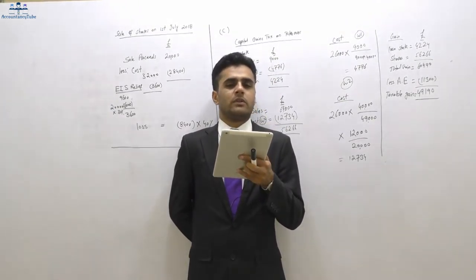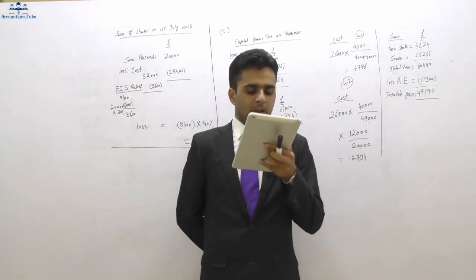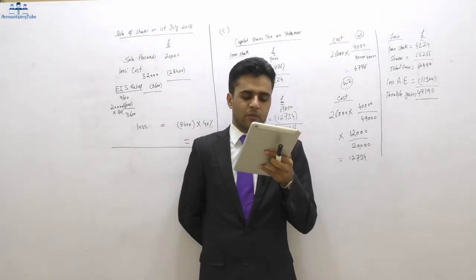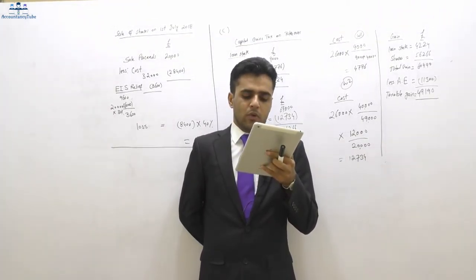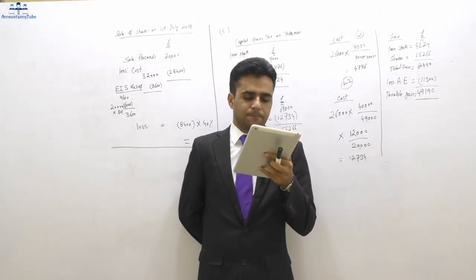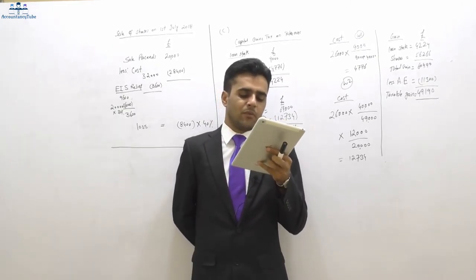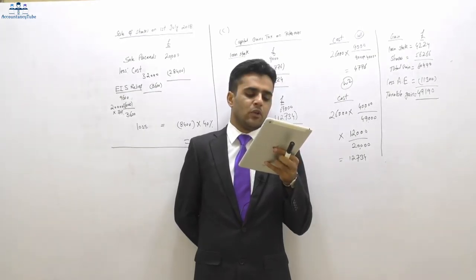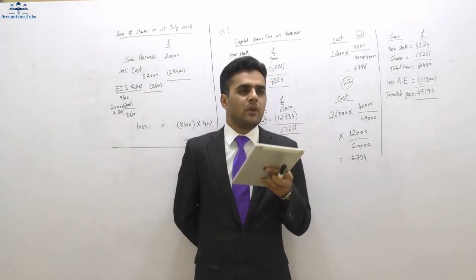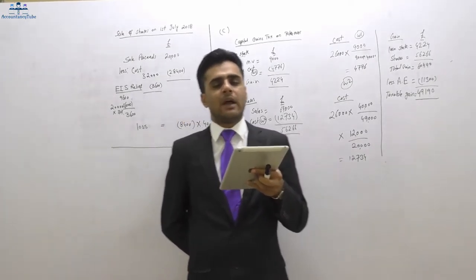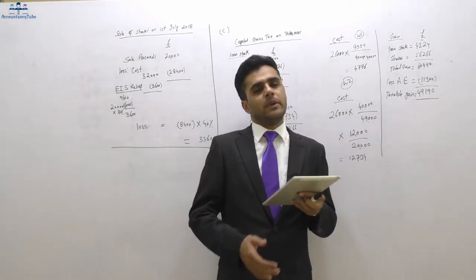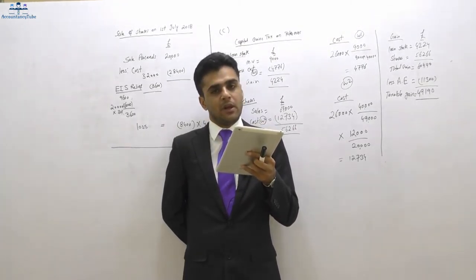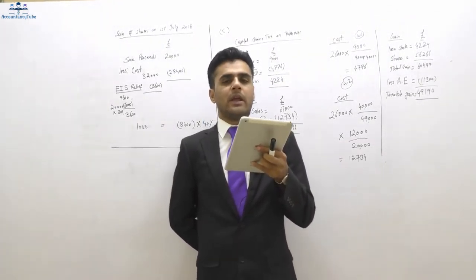Entrepreneur relief is available on gains of the following: disposal of all or part of the business, owned for at least one year before disposal, where the business is sold as a going concern; the disposal of one or more business assets at the time when the business ceases, owned for at least one year before disposal, and the asset sold within three years of the date of cessation.